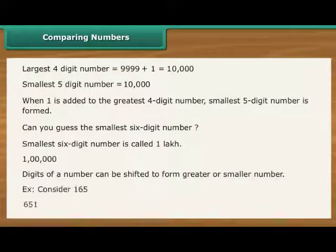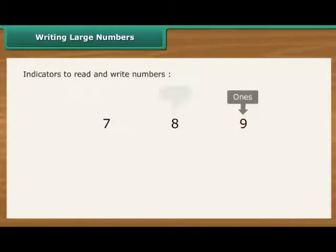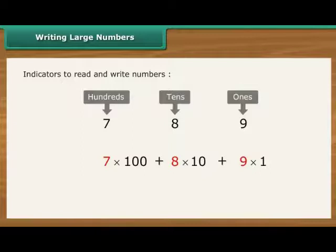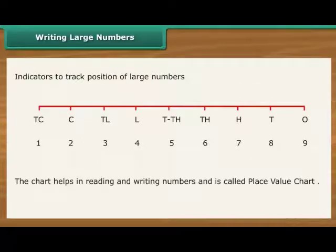Digits of a number can be shifted to form greater or smaller numbers. Let us see how. Writing large numbers. Sometimes, the large numbers are so large that it becomes difficult to keep track of. Then, it helps to use indicators to read and write large numbers. In a decimal number system, the value of a digit depends on its place or position in the number. Each place has a value of 10 times the place to its right. It can be extended to crores. The chart helps in reading and writing numbers and is called the place value chart.